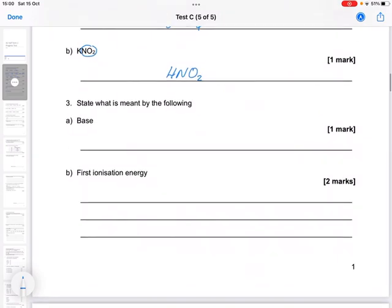And then state what is meant by a base. A base is the opposite of an acid. So an acid is a proton donor. So a base is a proton or a hydrogen ion acceptor.